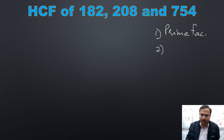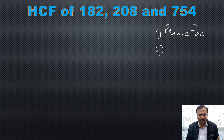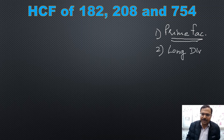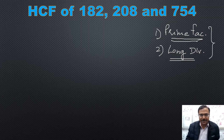How much time do you think you will take to make factors of these three large numbers? Perhaps two minutes, and then we have to find the HCF also — so probably around two and a half minutes through prime factorization. Prime factorization does not work well for very large numbers. The second method is the long division method, also taught at school level.